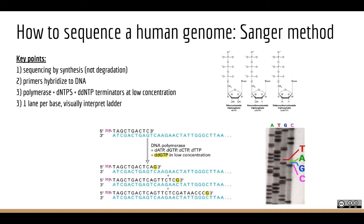You run each of the four reactions on a different lane in a gel, and those fragments separate by the length until a dideoxynucleotide was incorporated. Grad students would read the sequence by looking at the longest strand all the way down to the smallest, lane by lane. Super clever, worked really well — just slow and low throughput.